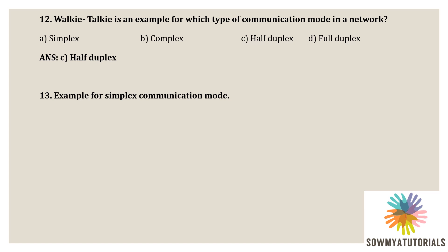Next question: example for the simplex communication mode. Options are option A - telephone, option B - walkie-talkie, option C - radio, option D - all of the above. The correct option is option C, radio, because in radio the sender can send the data but cannot receive data, so it is a unidirectional communication mode. Radio is an example of simplex communication mode where the sender can only send data but not receive.